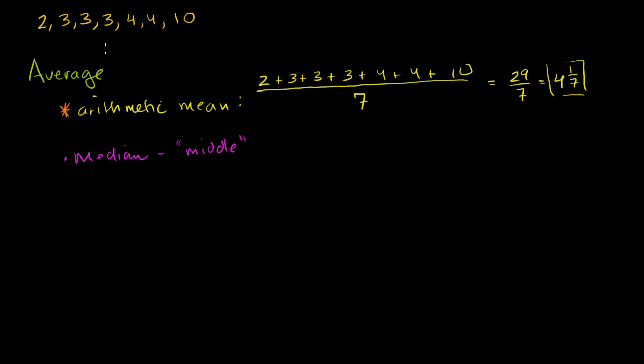And this literally is the middle number. And if there are two middle numbers, you actually take the arithmetic mean of those two middle numbers. You actually find the number halfway in between those two middle numbers. So the median of this set right here, let me just rewrite them. So I have a 2, 3, 3, 3, 4, 4, 10.